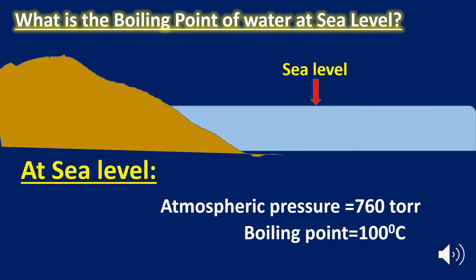What is the boiling point of water at sea level? Remember that the boiling point is directly proportional to the external pressure. At sea level, the atmospheric pressure is 760 torr, so the boiling point of water is 100 degree Celsius.